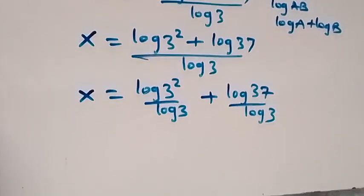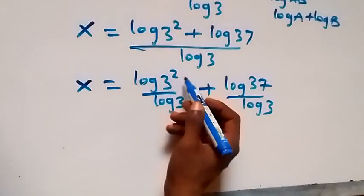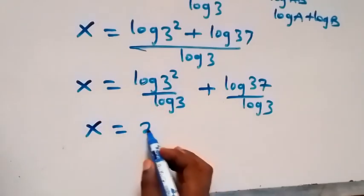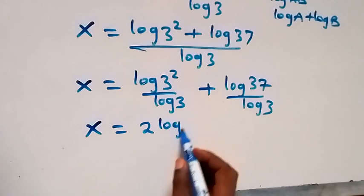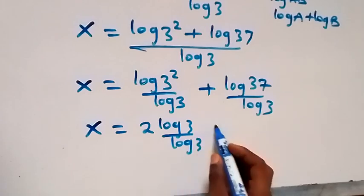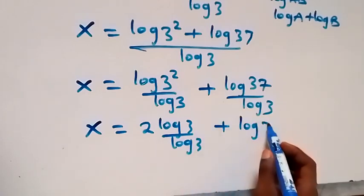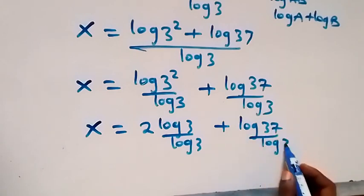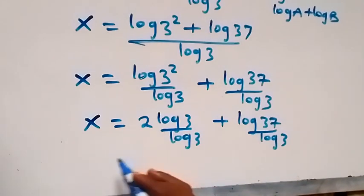Then from here, we apply the power log from here. These two can come to the back and we have 2 log 3 over log 3. Then here log 3 we cancel log 3. This gives us 2.